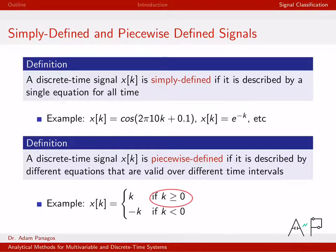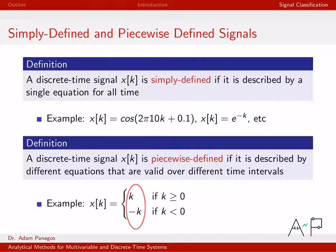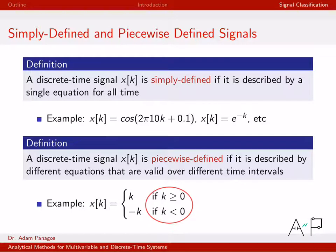Each of those equations holds for a different time interval. The example I gave has two time intervals corresponding to two different equations, but a signal could just as easily have three, four, or five time intervals — giving you a bigger bracket and a larger stack of equations and intervals. Importantly, those intervals must cover the entire time axis. Here we have k greater than or equal to 0 and k less than 0, which covers all time k.